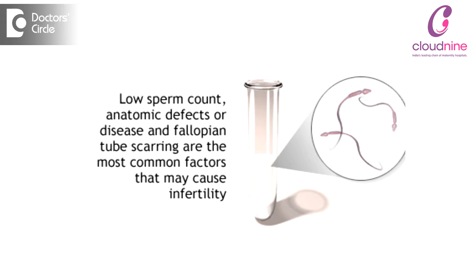As far as oligoasthenoteratospermia is concerned, the term used is: oligo means on the lesser side, astheno means the motility is on the lesser side, and teratospermia means that the morphology of the sperm is not up to the mark. These are the parameters which can happen with the male partner regarding sperm issues, and this needs to be addressed significantly as it can lead to significant problems in conception.